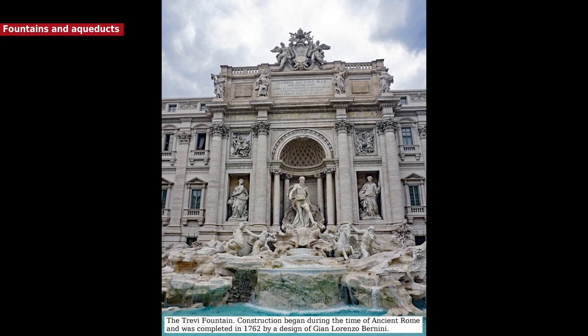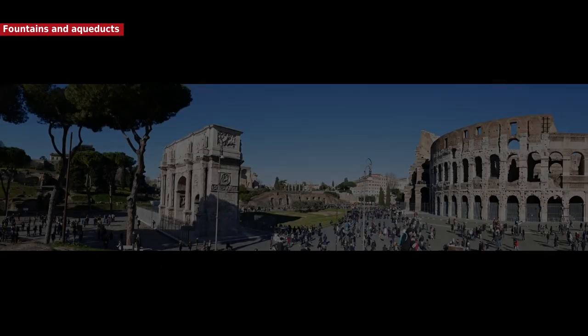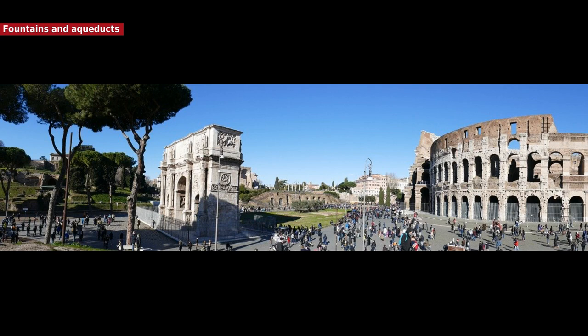Rome is a city famous for its numerous fountains, built in all different styles, from classical and medieval to Baroque and neoclassical. The city has had fountains for more than 2,000 years, and they have provided drinking water and decorated the piazzas of Rome. During the Roman Empire, in 98 AD, according to Sextus Julius Frontinus, the Roman consul who was named Curator Aquarum or Guardian of the Water of the City, Rome had 9 aqueducts which fed 39 monumental fountains and 591 public basins.